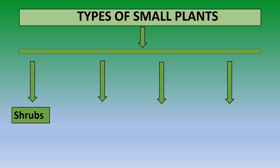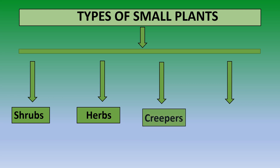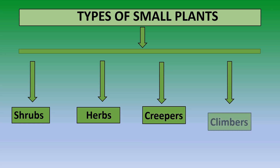The four types of small plants are: shrubs, herbs, creepers, and climbers. Now let's discuss each of them in detail.